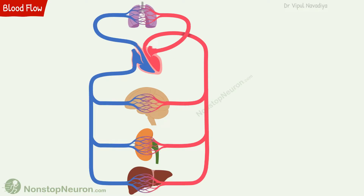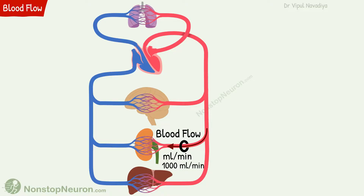This is a schematic diagram of the circulatory system. Blood flow is a quantity of blood that passes a given point in the circulation in unit time. It is usually expressed as milliliters per minute. For example, renal blood flow is about 1000 ml per minute. In an adult person, total blood flowing through the entire systemic circulation is about 5000 ml per minute under resting conditions. This total blood flow is also called cardiac output.